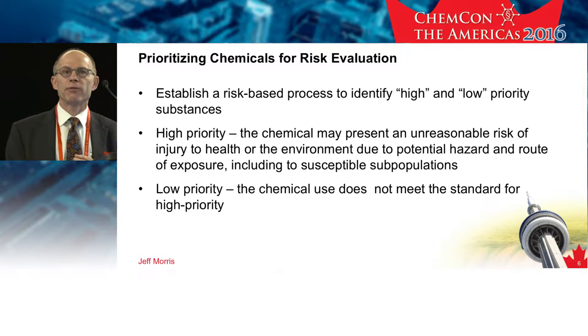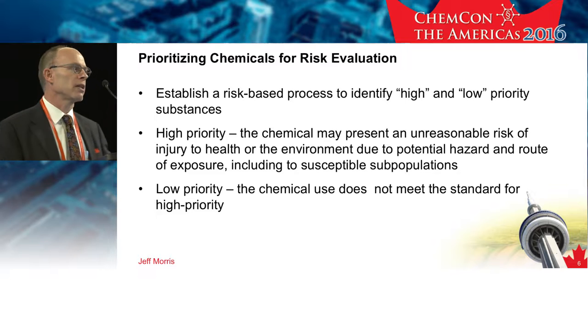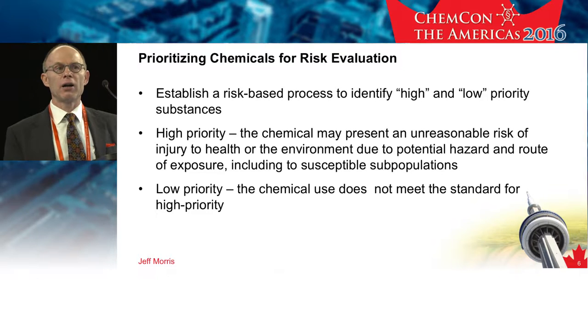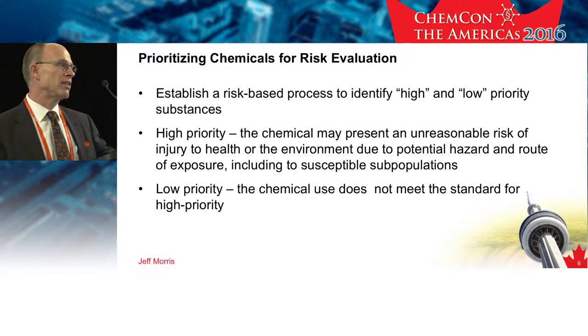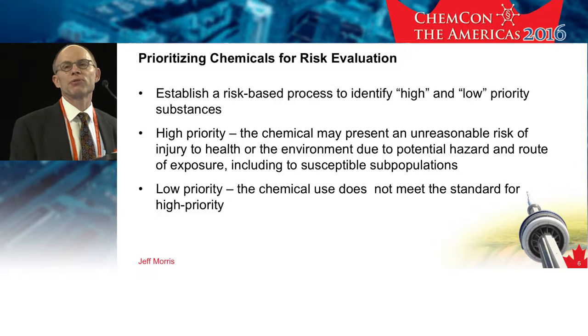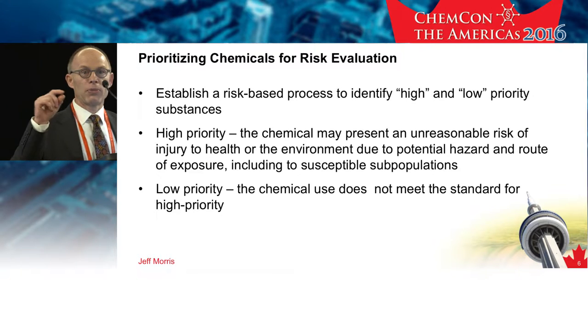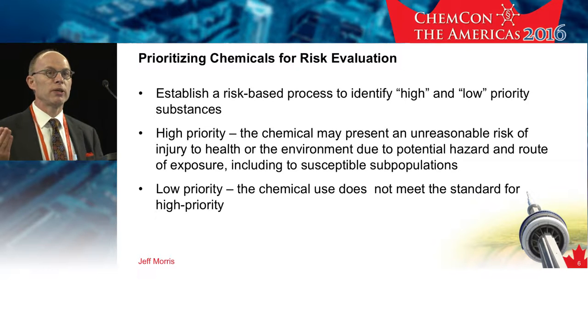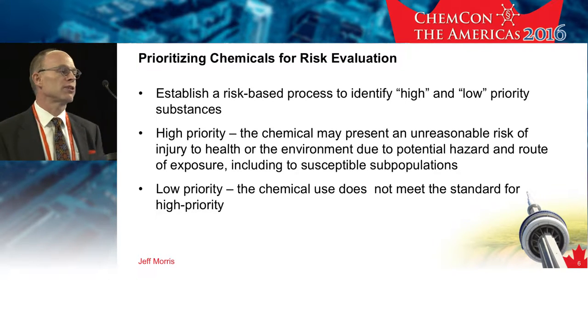If we identify a chemical as a high priority for risk evaluation, we must move directly to conduct that risk evaluation — we have three years to do it. One starting point is to fulfill another provision of the law, which is to identify an active inventory of chemical substances. Whatever that number is of active substances, that becomes the universe on which we'll do this prioritization exercise to identify those chemicals that will be candidates for risk evaluation.